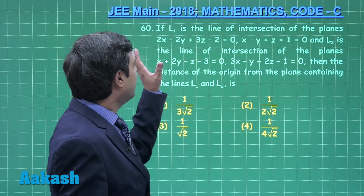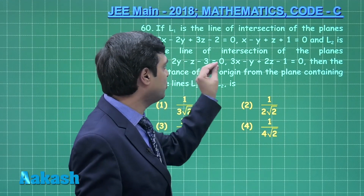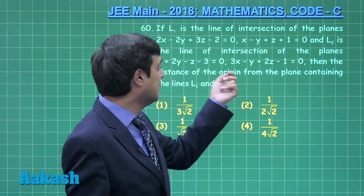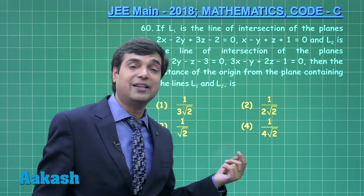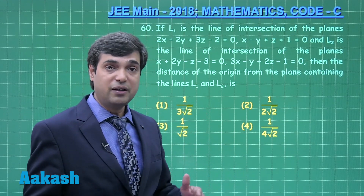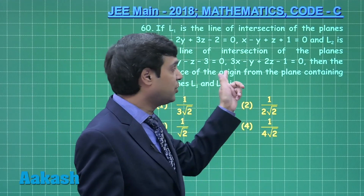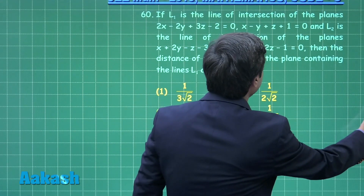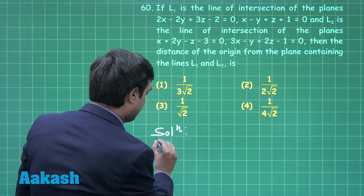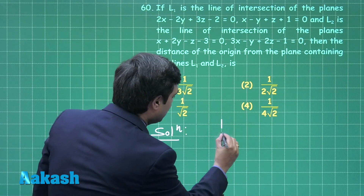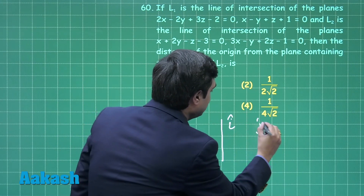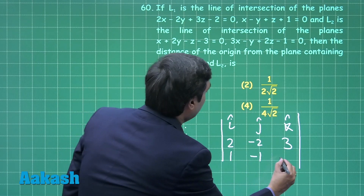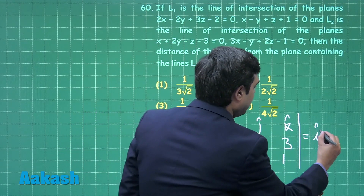Moving to question number 60: L1 is the line of intersection of the planes 2x - 2y + 3z - 2 = 0 and x - y + z = -1, and L2 is the line of intersection of two other planes. We need to find the distance of the origin from the plane containing lines L1 and L2. We first find direction ratios of L1 using the cross product, getting i + j.